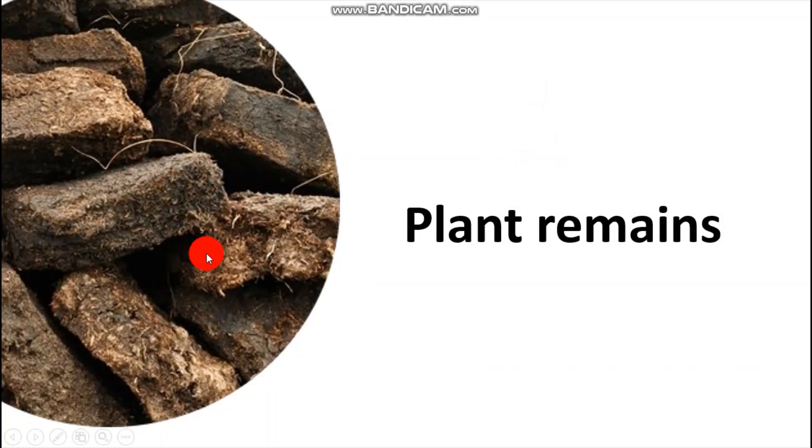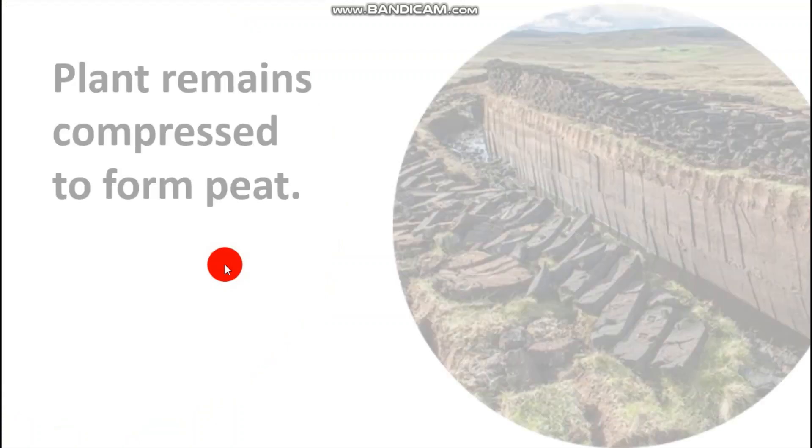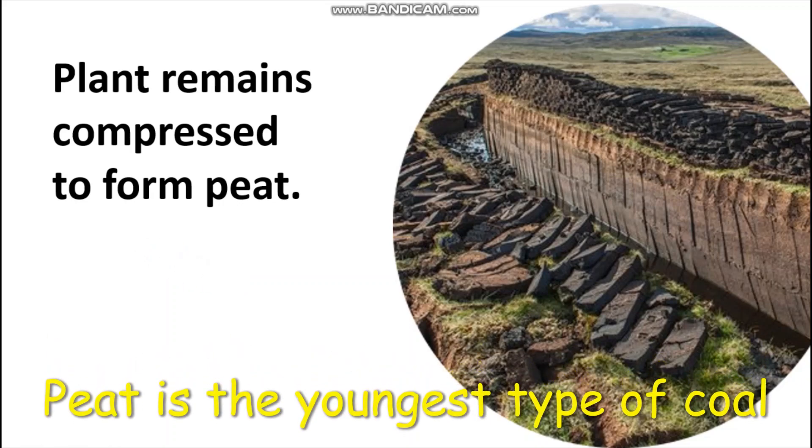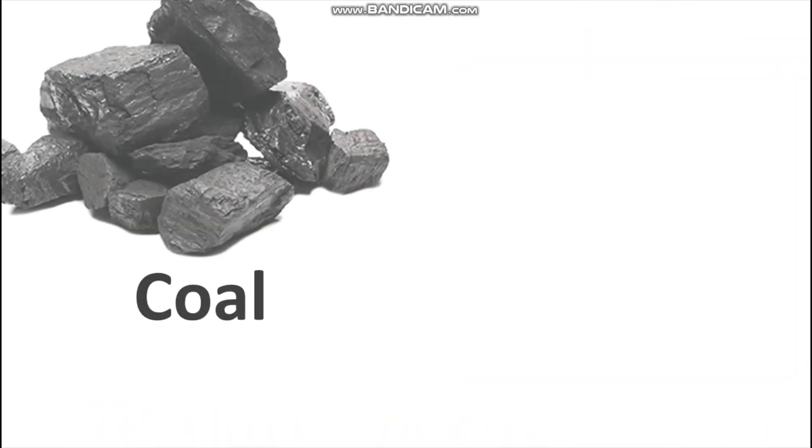The third category of sedimentary rocks are the organic sedimentary rocks, which are formed organically. We have remains of plants and animals which, when buried over a long time and compressed, lead to the formation of a rock. The plant remains which are buried over time and compressed lead to the formation of peat.